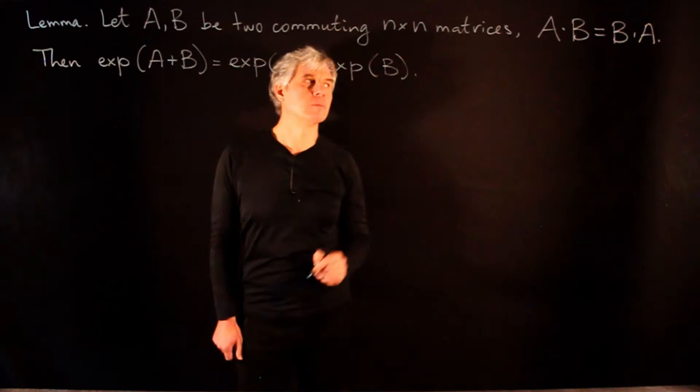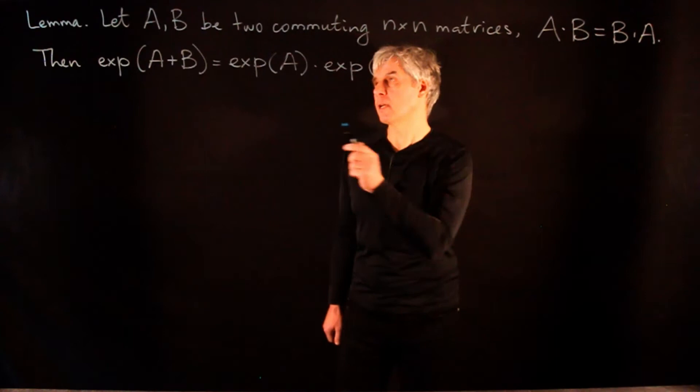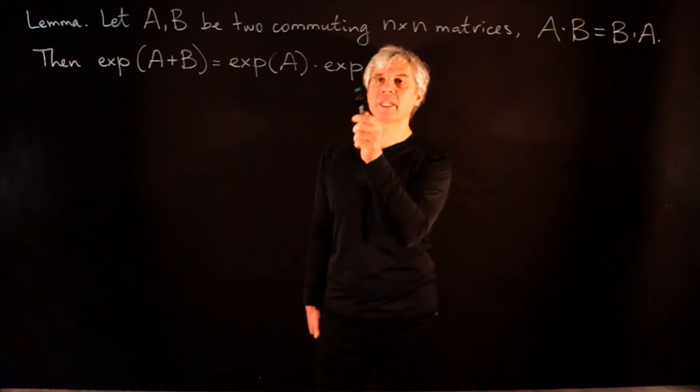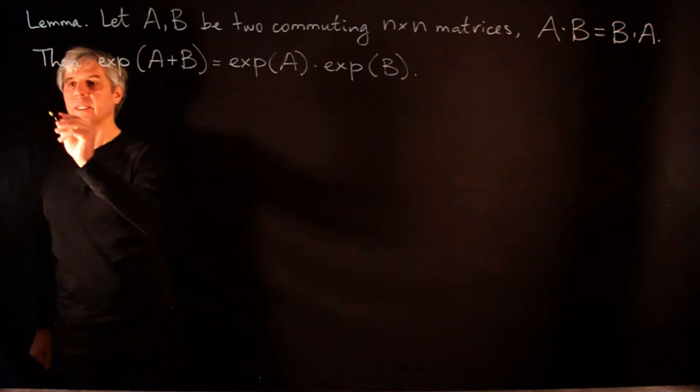Note that the claim of this lemma does not hold for non-commuting square matrices. Because while A + B and B + A are always the same, on the right-hand side, the exponential of A times the exponential of B is not equal to the exponential of B times the exponential of A for non-commuting matrices. Let us prove this statement.